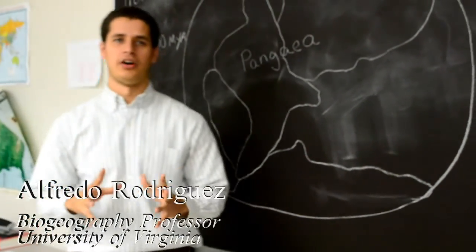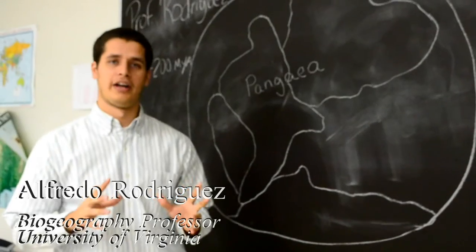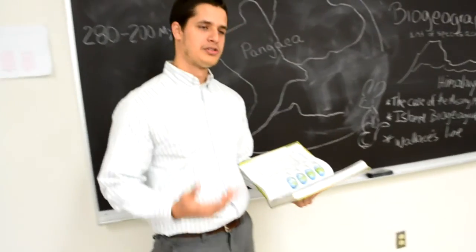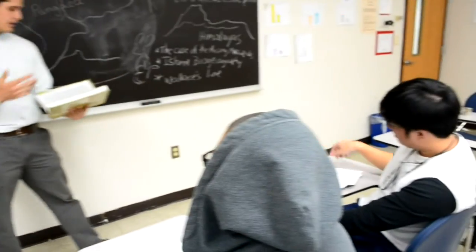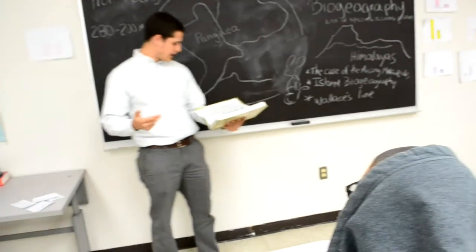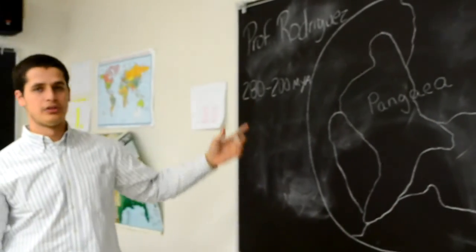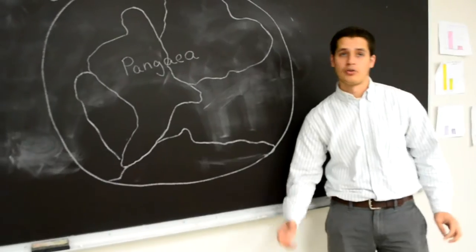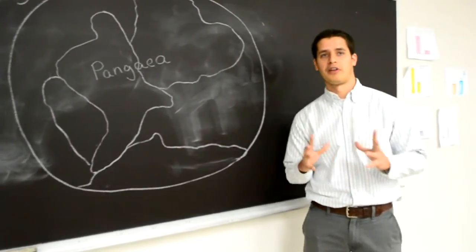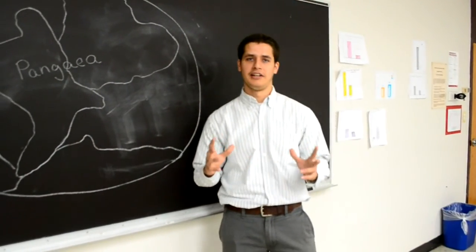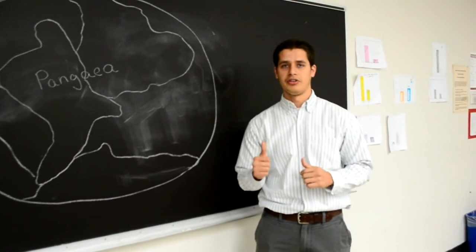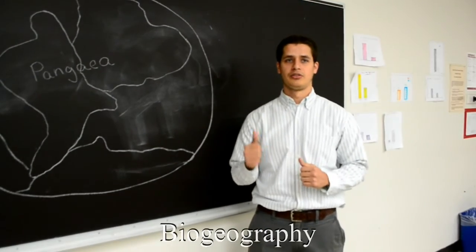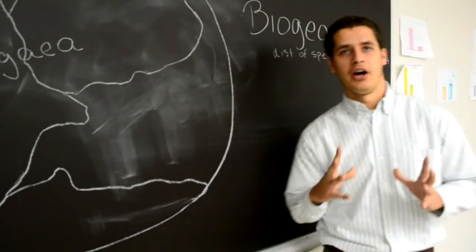It might seem hard to imagine that Earth's continents have not always been located where they are right now. But a world of evidence, including the distribution of key fossils, indicates that the continents were once united in a supercontinent called Pangea, about 280 to 200 million years ago. Biogeography considers species' geographical location, and geographical barriers greatly influence the distribution of species. It is therefore not surprising that geography and biology overlap in one field — biogeography, the study of the distribution of species across the planet. The theory of plate tectonics explains Earth's shifting continents.